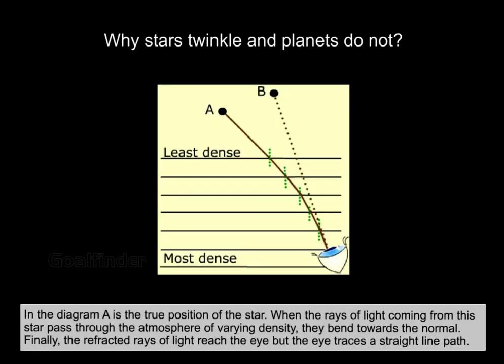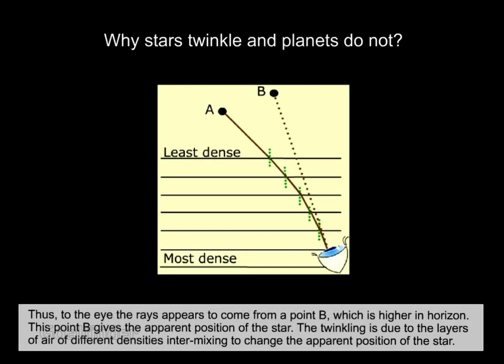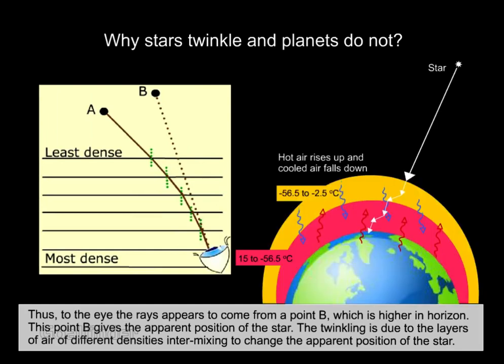In the diagram, A is the true position of the star. When the rays of light coming from this star pass through the atmosphere of varying density, they bend towards the normal. The refracted rays of light reach the eye, but the eye traces a straight line path. Thus, to the eye, the rays appear to come from a point B which is higher on the horizon — this point B gives the apparent position of the star. The twinkling is due to the layers of air of different densities intermixing to change the apparent position of the star.